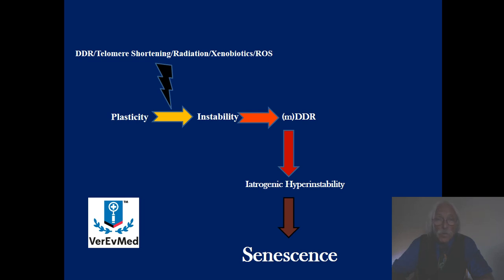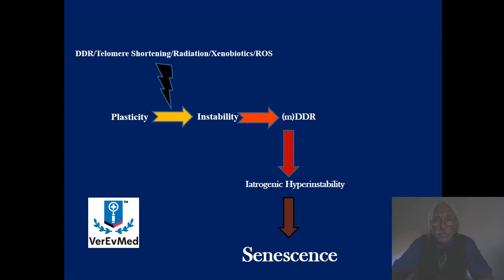What else leads to instability? Your standard bad players: radiation of any kind — that includes radiation from the sun, UV light in particular, which can have a tremendous effect on plasticity, leading to genome instability. Xenobiotics — any organic compound, or even inorganic compound — can cause some damage to the genome or other physical, chemical, or biological damage to the cell, so that plasticity is converted into instability at the genomic level.